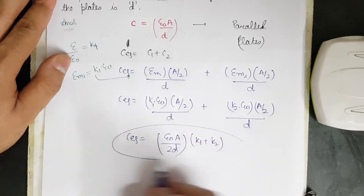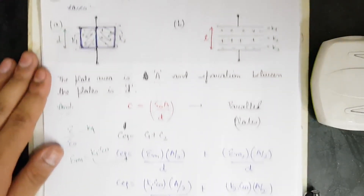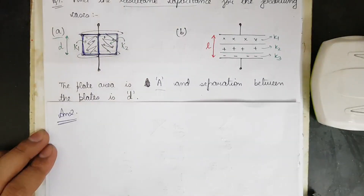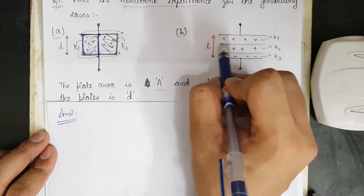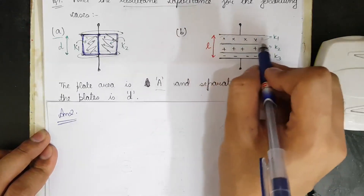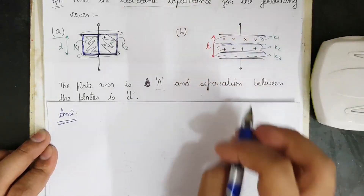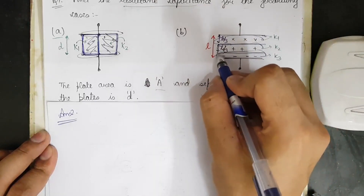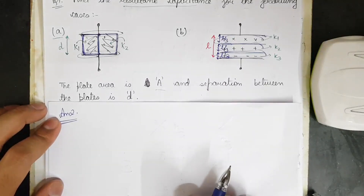This first example covers the parallel case. Now for the second part: the total separation is l, and three dielectric slabs — k1, k2, k3 — each occupy one-third of the gap, so the separation for each is l/3. These are connected in series because the potential is not the same across them.